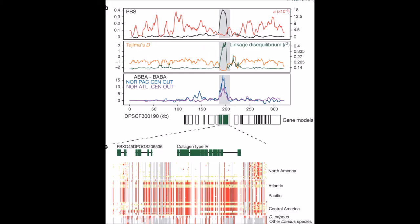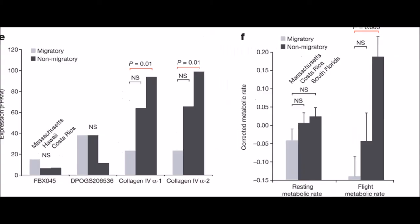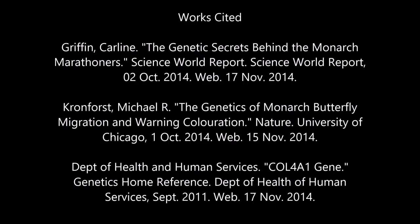Now take a look at these graphs which show the phenomenon explained previously. The graph on the left shows that in the migratory butterflies, the expression of the collagen 4 protein is greatly reduced compared to the non-migratory butterflies. The graph on the right shows how the metabolic rate of the migratory butterflies is much less than the non-migratory butterflies. Kronforst believes that it is the reduced expression of the collagen 4 protein that causes the reduced metabolic rate, which allows the migratory butterflies to make such vast migrations.